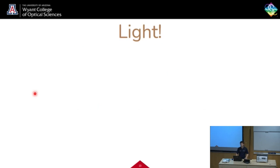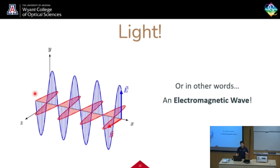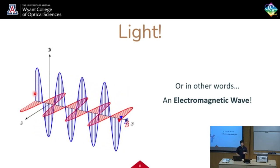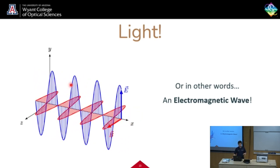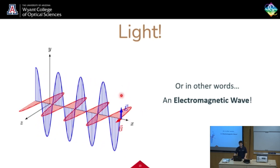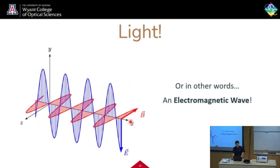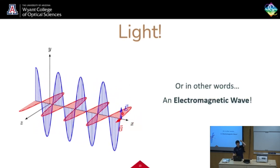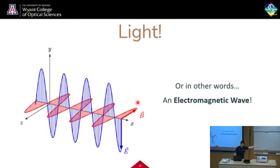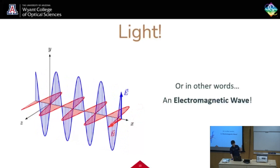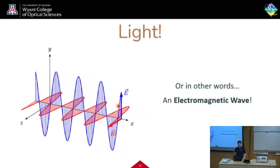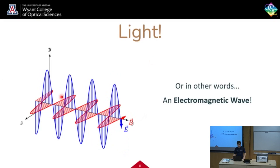This is what light is — an electromagnetic wave. This looks a little confusing, but focus on the arrows at the end. You can see there is an electric field, which induces a magnetic field, which induces an electric field, which induces a magnetic field. You follow the arrows. This is why it's called an electromagnetic wave — it looks like a wave.